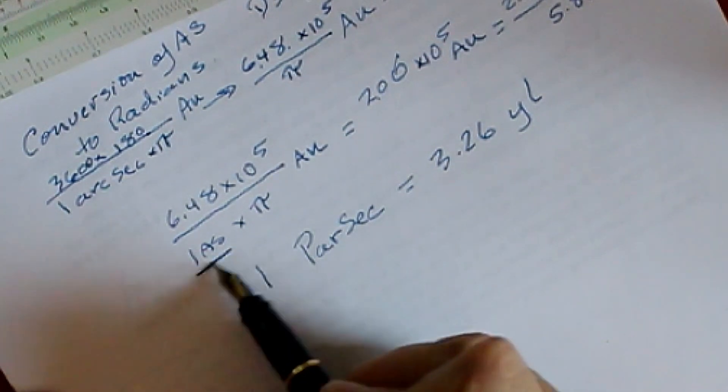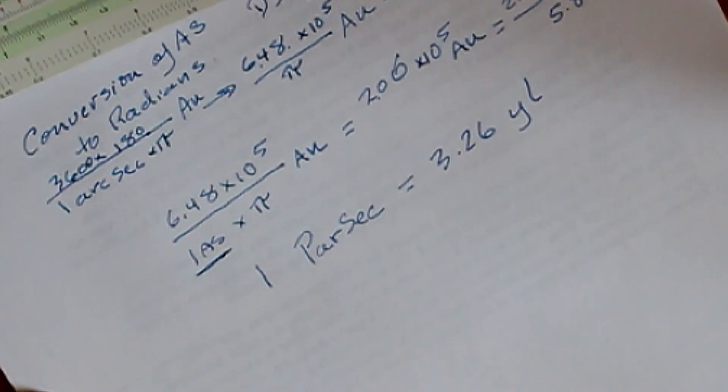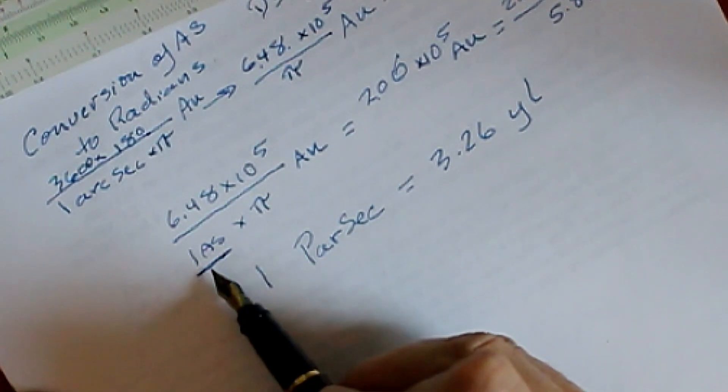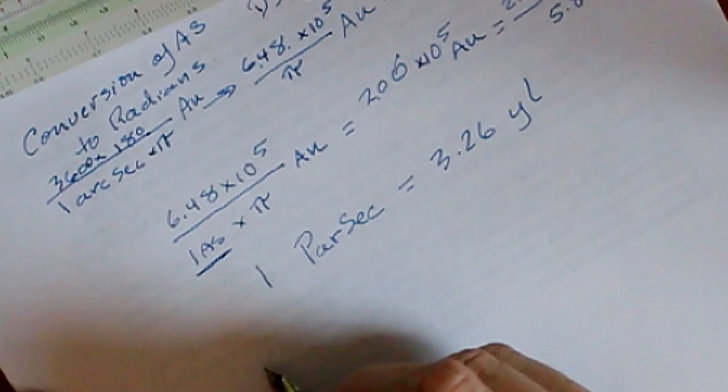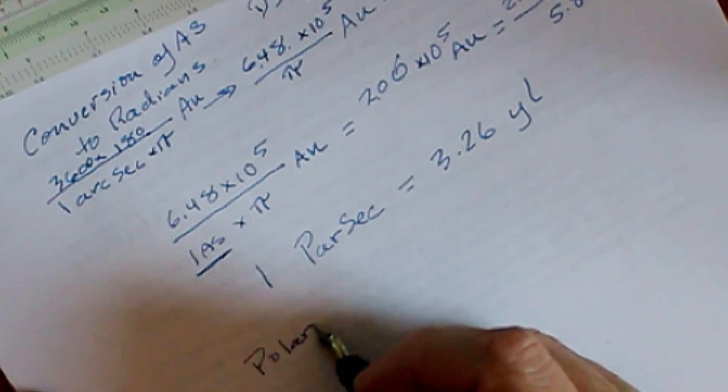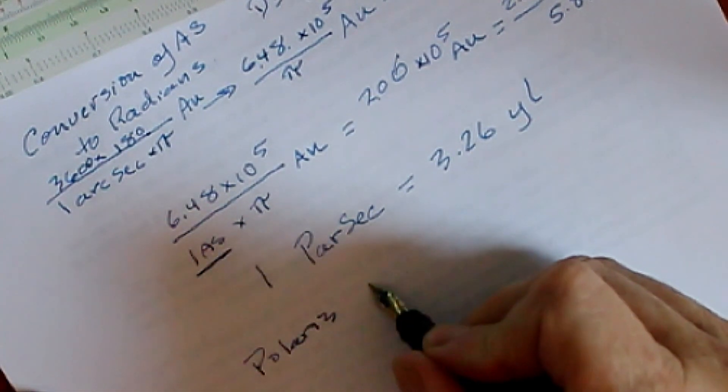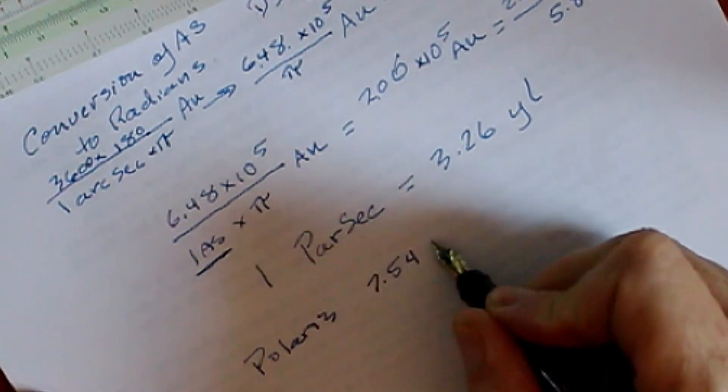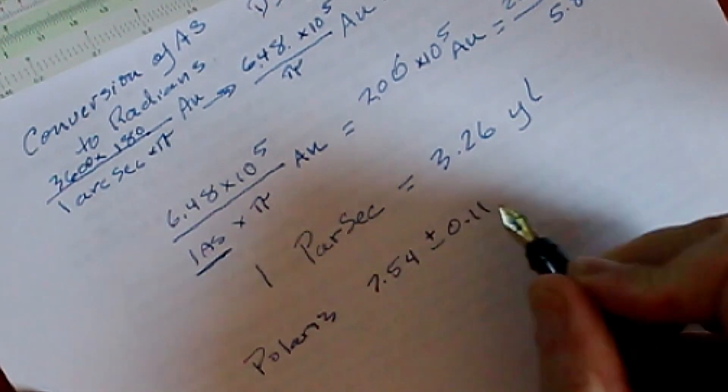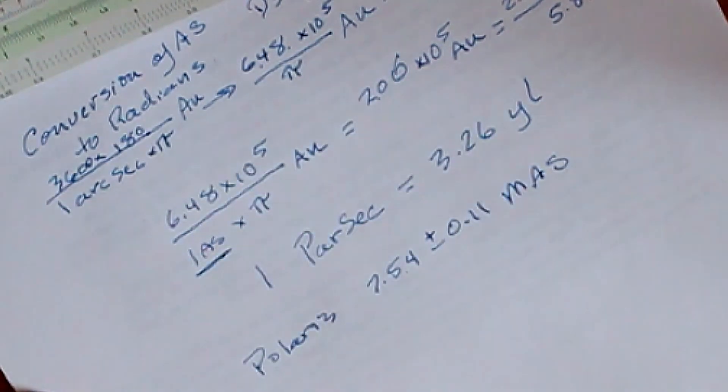Now, right here, we've got one arc second. But what if the parallax to the star is not one arc second? What we would do then would be to substitute the actual number of arc seconds for this one. So let's take an example. Polaris is 7.54 plus or minus 0.11 milliarcseconds. That's the parallax of Polaris.